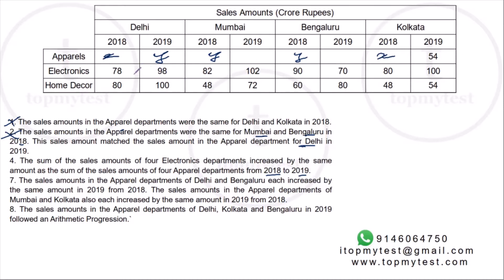Calculating the electronics increase: plus 20, plus 20, minus 20, plus 20 gives a net increase of 40. So the apparel total increase must also be 40. The seventh statement says Delhi and Bengaluru each increased by the same amount from 2018 to 2019. The increase in Delhi is Y minus X, so Bengaluru's 2019 value will be Y plus (Y minus X), which equals 2Y minus X.